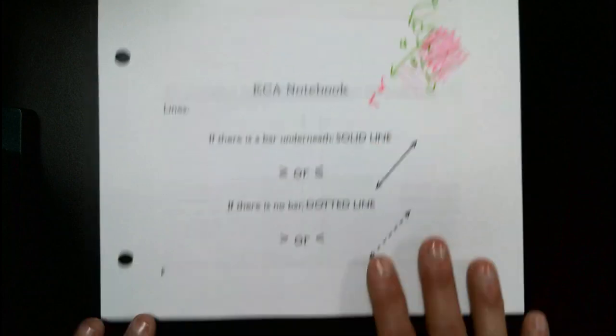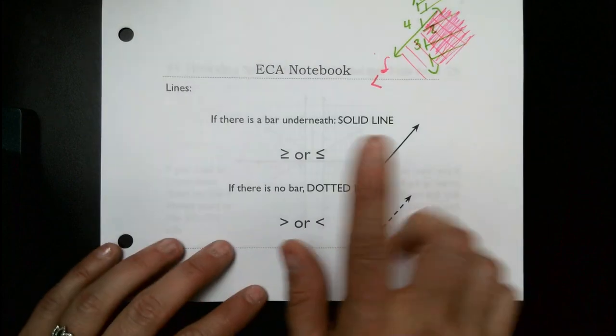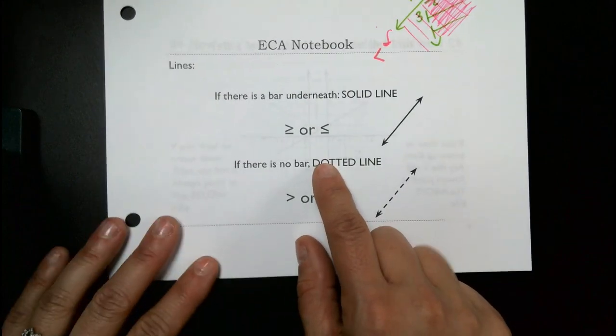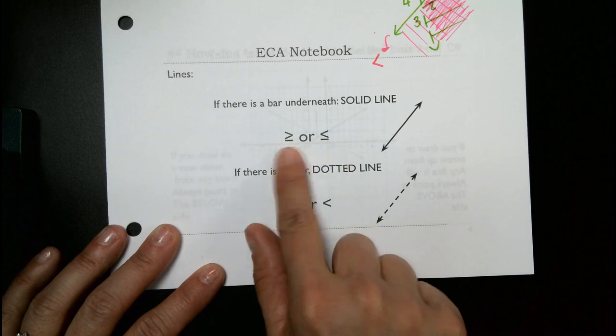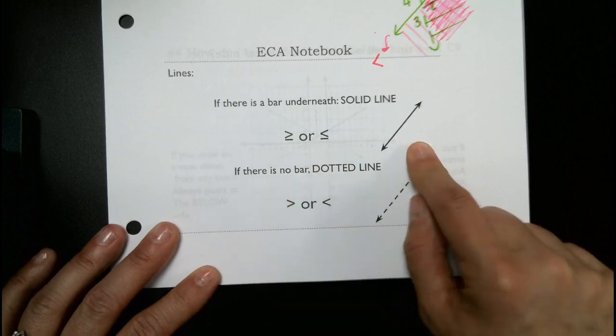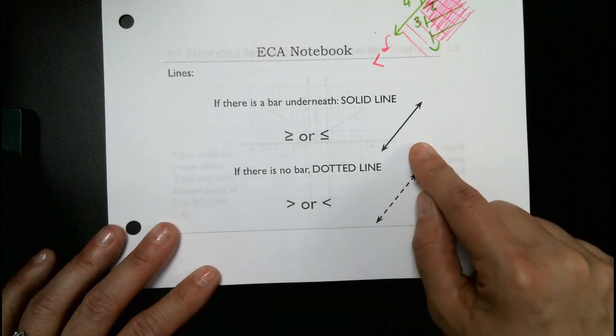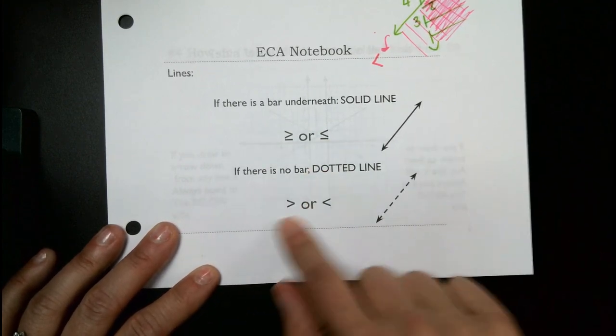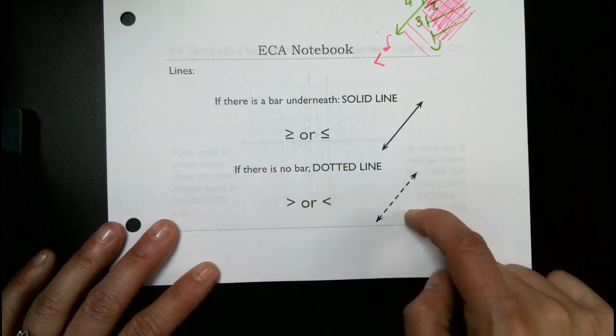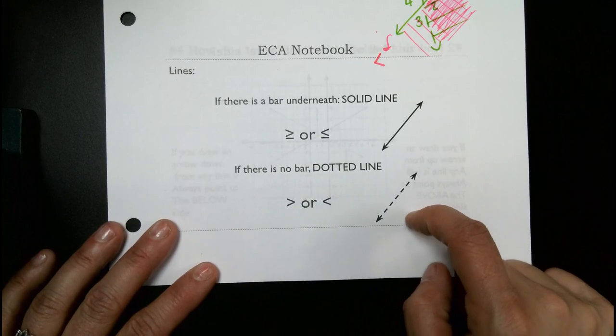Just a reminder: if there is an equal sign, we're making a solid line, and if there's no equal sign it's dashed. We went through that yesterday. Go ahead and turn the page.